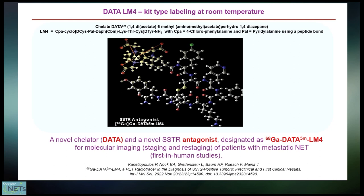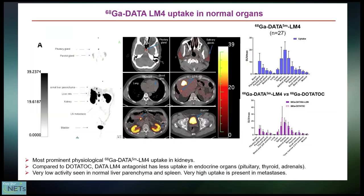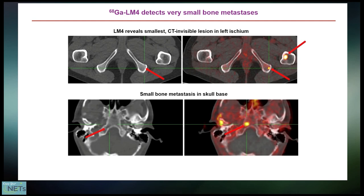Our group together with Frank Roesch have developed a new chelator called DATA — not DOTA, but DATA. And this was coupled to a novel antagonist called LM4. This antagonist and the new chelator demonstrated most physiological uptake in the kidneys, but very low uptake in normal endocrine organs like the pituitary gland, thyroid, and adrenals, and very high uptake in metastases, like in the liver or in the bone.